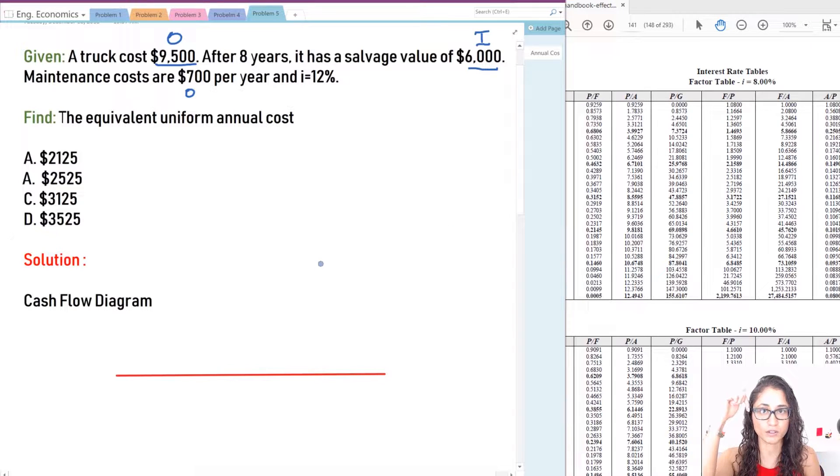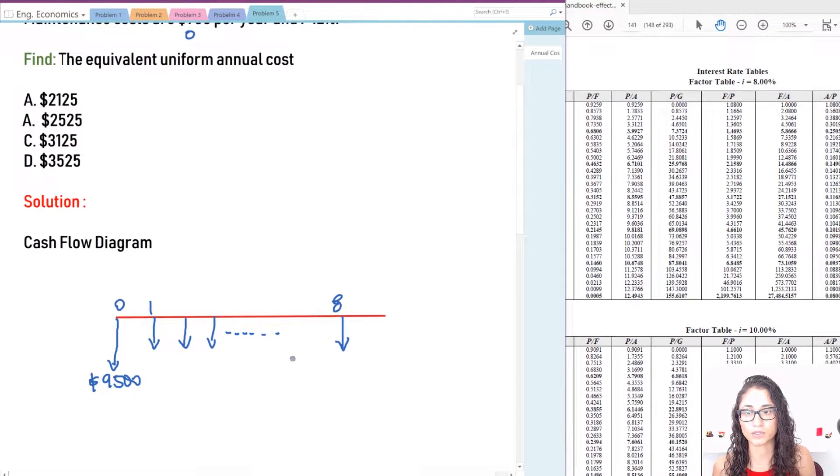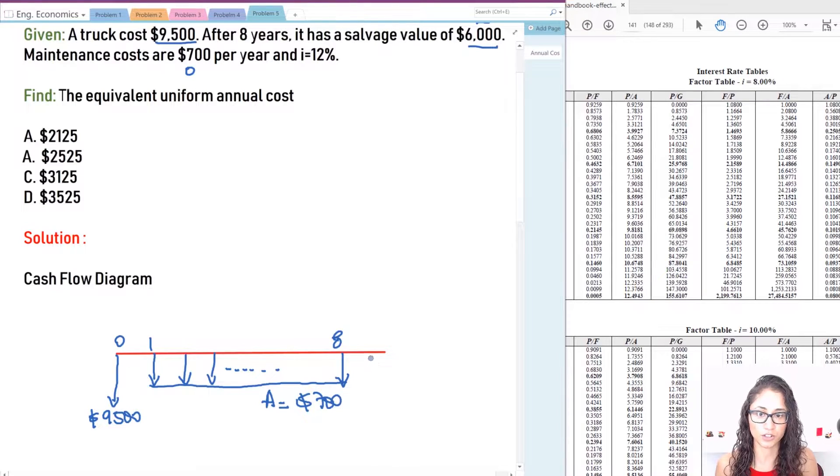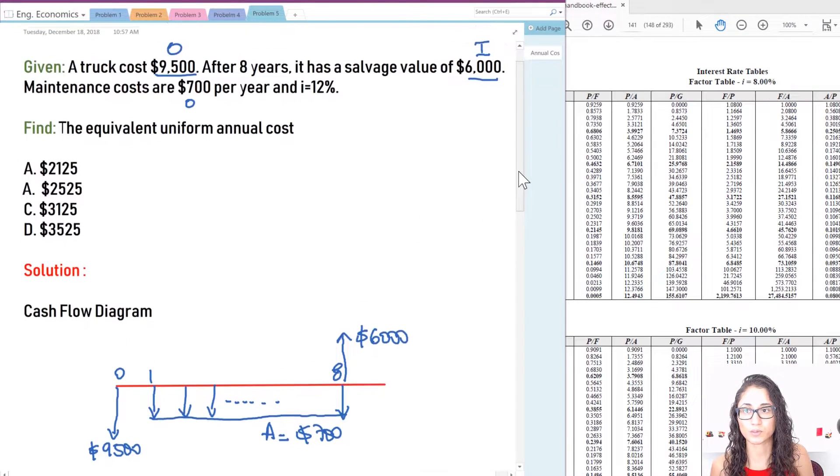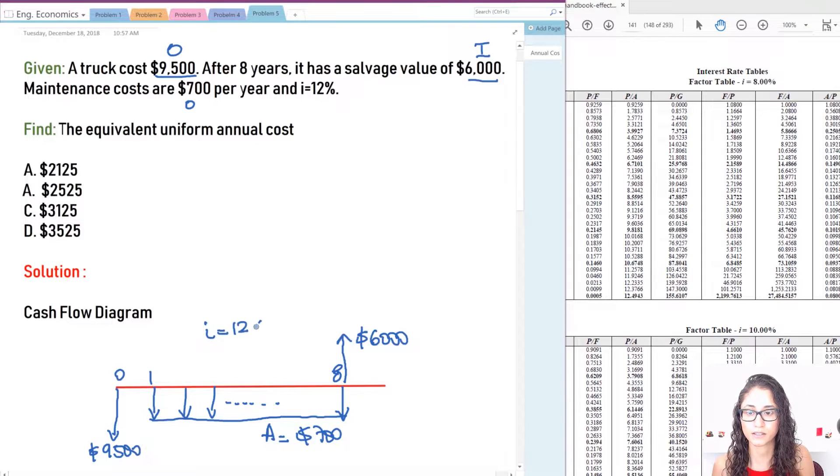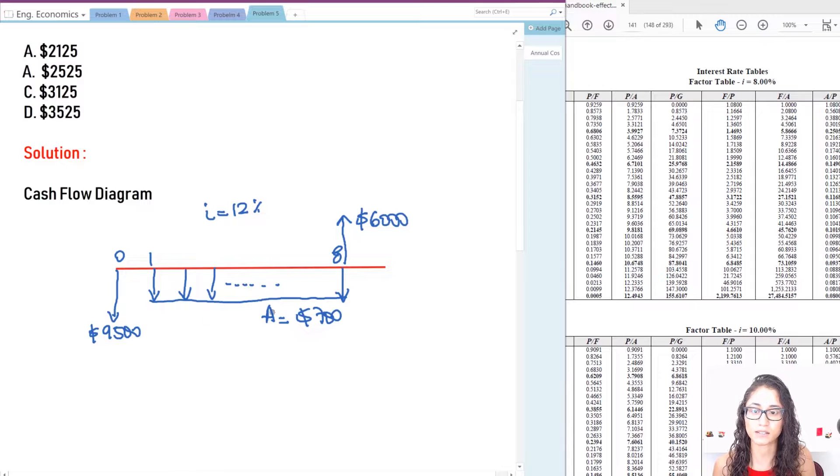Okay, so let's draw the diagram. Remember, outflow, we have arrow down. Inflow, we have an arrow up. So we have here present worth. I have $9,500. That's at year zero. Then we have eight years. So I'm just going to do one, two, and so on, and then let's just say this is eight. This is all A, right? That A is $700 per year. So every single year, you spend $700. Now at year eight, you're going to make $6,000 from this truck. That's your salvage value.